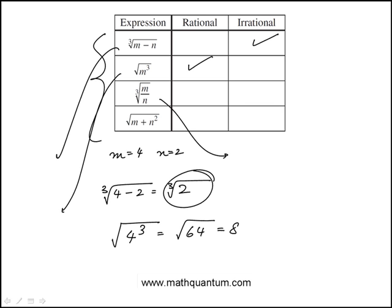And then that is cube root of m over n, so that's going to be again cube root of 2, that's irrational.